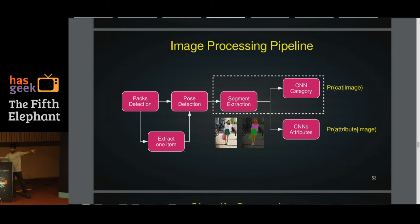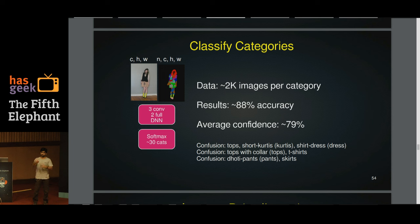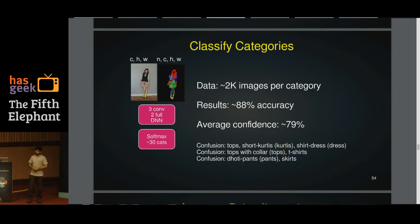Image segmentation and image classification have been receiving a lot of attention recently because of advances in deep learning. Image segmentation assigns a category label to each pixel. For image classification, we take the segmented image and give it to a convolutional neural network, with a softmax at the end covering about 30 categories.